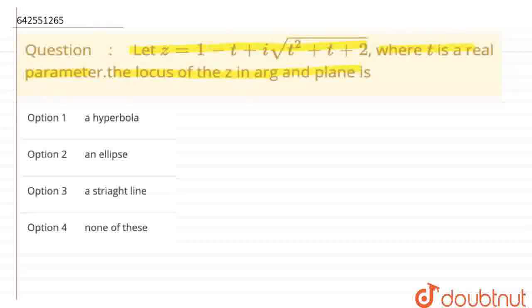So, it is very simple. Let's approach the question which is z equals 1 minus t plus iota times square root of t squared plus t plus 2. So, if I compare this equation with x plus iota y, then what is the value of x and iota y? See, this is the value of x and this is the value of y.